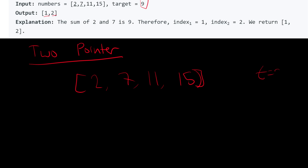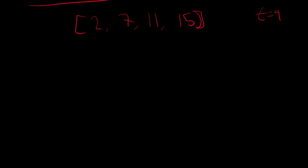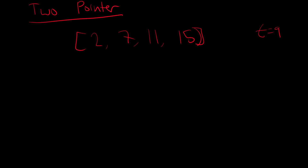We set two pointers. As the algorithm name suggests, we set a left pointer equal to the very first index — pointing at 2 — and a right pointer equal to the very last index — pointing at 15. We'll keep iterating until they meet in the middle, so our condition is: while left is less than right.